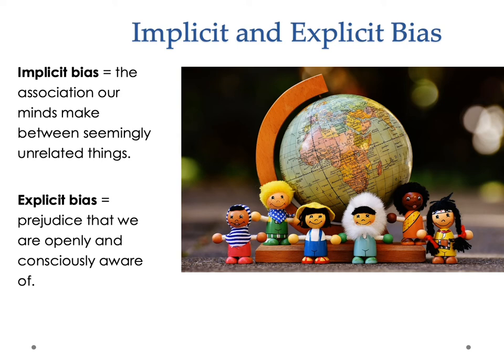By contrast, testers are much faster at identifying books when shown white people or when shown Asians. This is the association between two seemingly unrelated things — books and Asian-ness, knives and Black people — that we make very quickly and with a high degree of speed. If, when I talk about the experience of Black Americans, you immediately think about people living in cities or people who are poor, that would be an example of an implicit bias — a series of assumptions that reflects a bias about one group versus another.